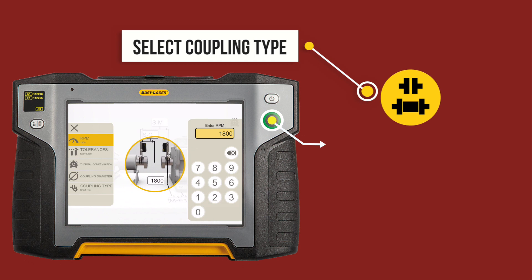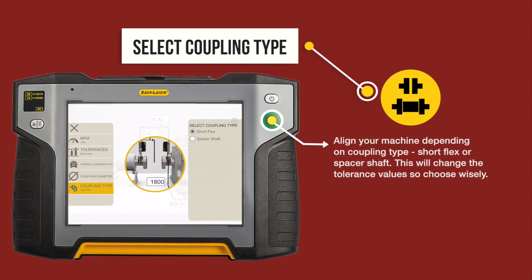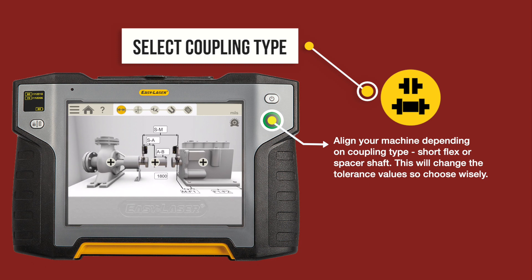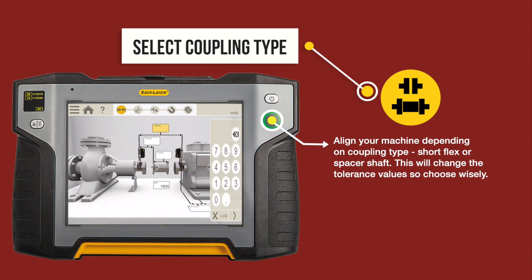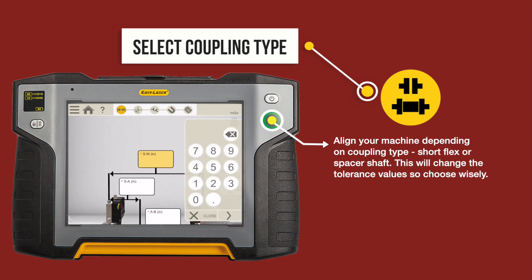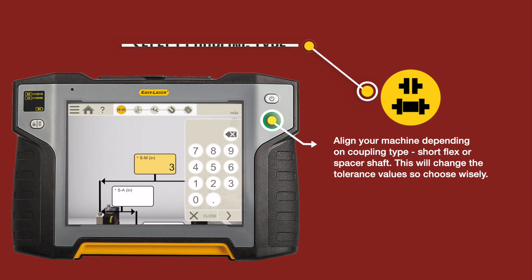Select coupling type. Align your machine depending on coupling type — short flex or spacer shaft. This will change the tolerance values, so choose wisely.